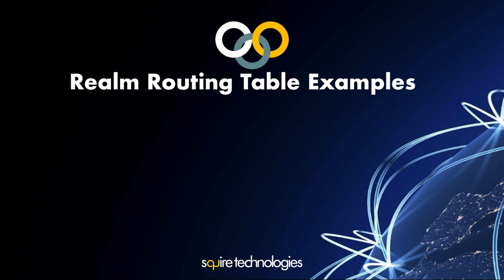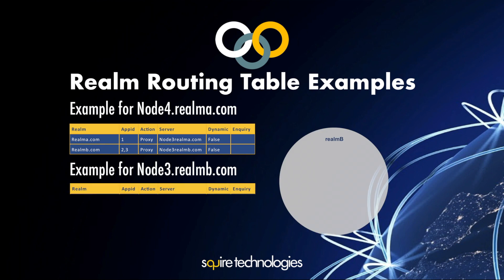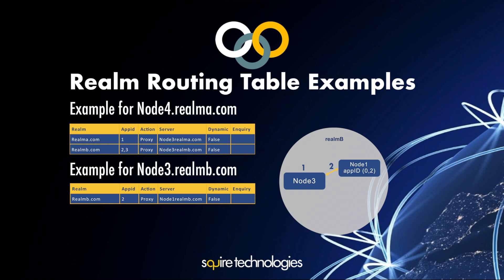Here is an example of realm routing tables. For node 4: if a message arrives targeting realm A with application ID 1, it is proxied through node3.realmA.com; if targeting realm B with application ID 2 or 3, it is proxied to node3.realmB.com. For node 3 in realmB.com: if application ID 2 comes in, it is sent to node 1; if application ID 3 comes in, it is sent to the node supporting application ID 3.